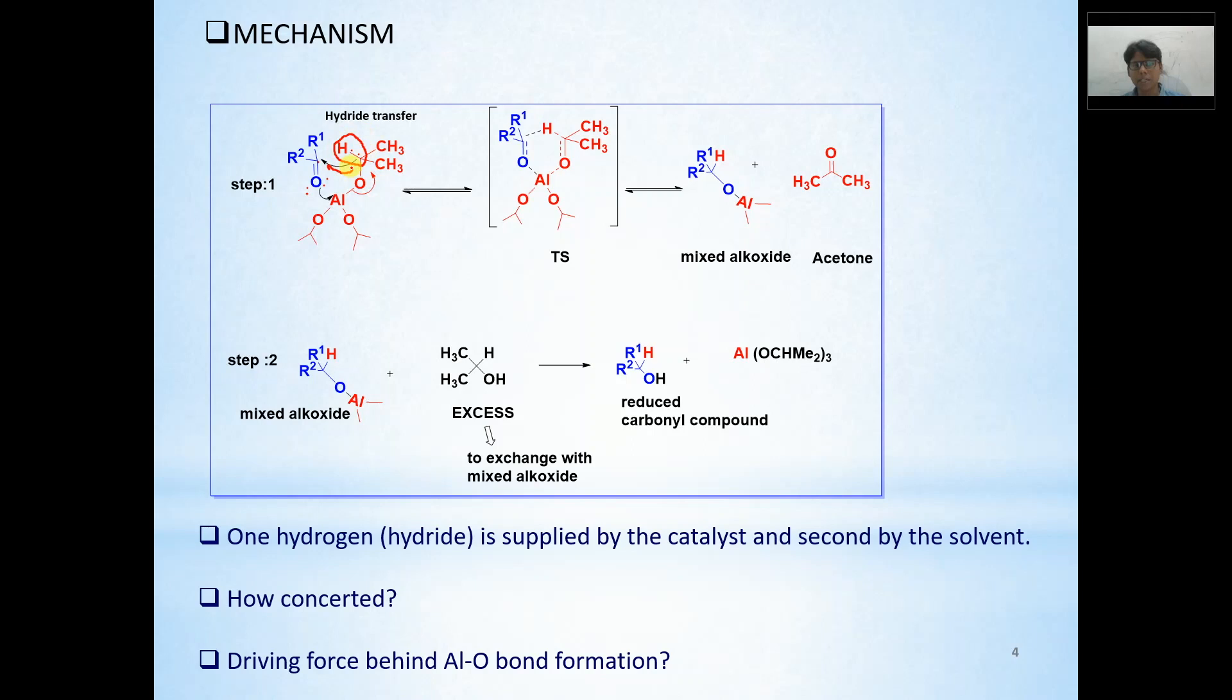But when it happens, this becomes a double bond. Both the electrons now remain with hydrogen. So it becomes hydride and hydride can move from here to this carbonyl carbon, which was rendered electrophilic because of this aluminum center. Because aluminum has already abstracted this electron pair from oxygen, hydride can very easily attack this carbonyl carbon.